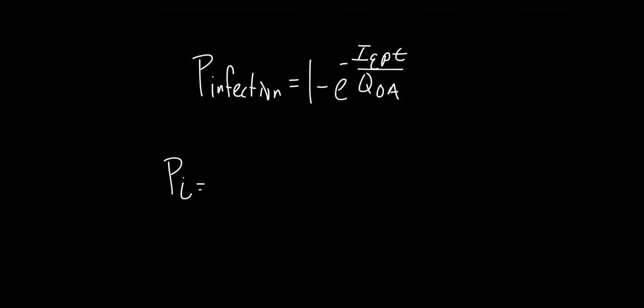A report done by the Built Environment Research Group applies a modified form of this equation that considers the level of filtration and the amount of recirculated air. The resulting equation looks like this.